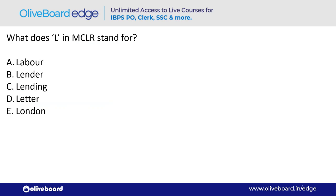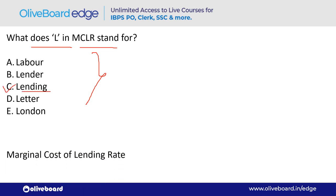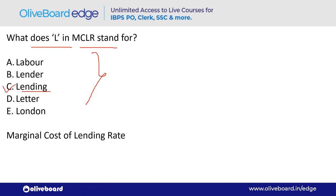What does 'L' in MCLR stand for? MCLR is the minimum rate at which banks offer interest. L stands for Lending. The full form is Marginal Cost of Lending Rate.